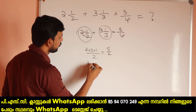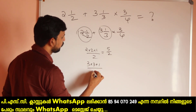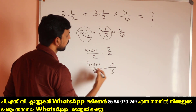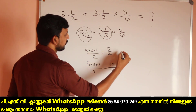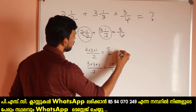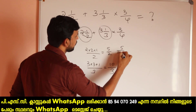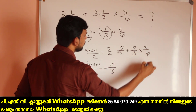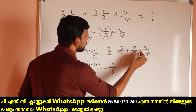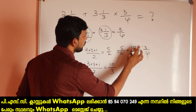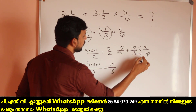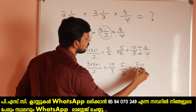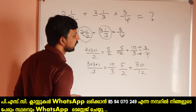3 into 3 plus 1 divided by 3. Now 3 into 3 is 9, plus 10 by 3. We have to write 2 into 3. Here, 5 by 2 plus 10 by 3, 2 into 3 by 4. We have to write 2 into 3 plus 1. This is 1 plus 1. Now 5 by 2 plus 10 by 3, 3 into 3, 2 into 3. We have to write 3 into 3.